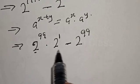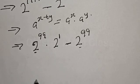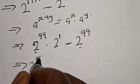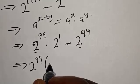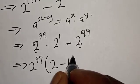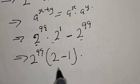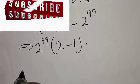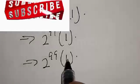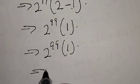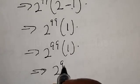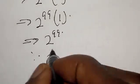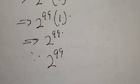From here we have 2 raised to power 99 in both terms, so let's factor it out. This implies that we have 2 raised to power 99 into bracket 2 raised to power 1 minus 1, which is 2 minus 1. That gives us 2 raised to power 99 multiplied by 1. Therefore our final answer is 2 raised to power 99.